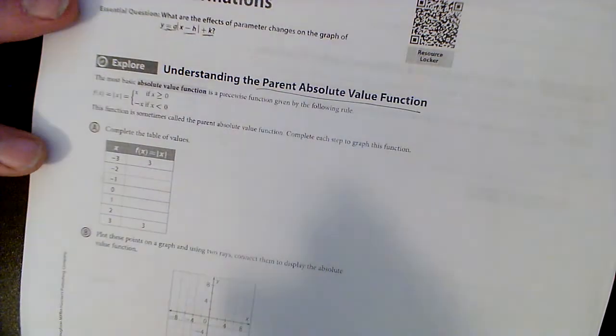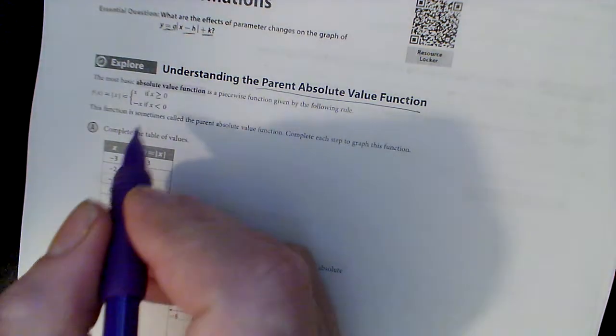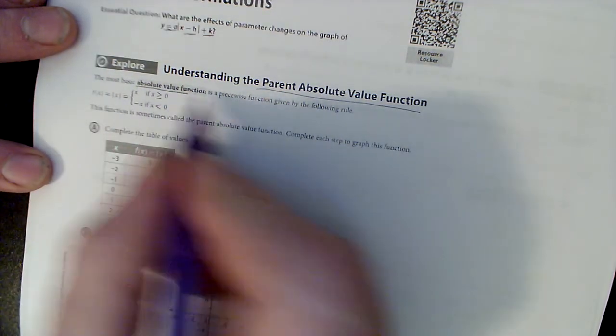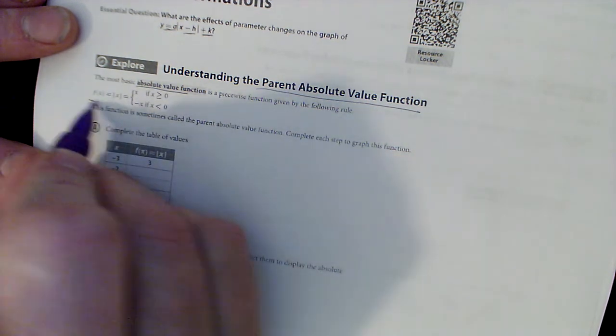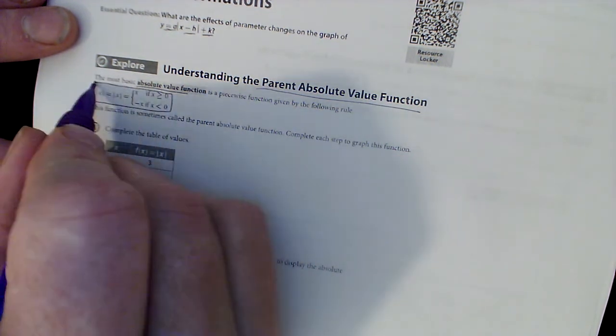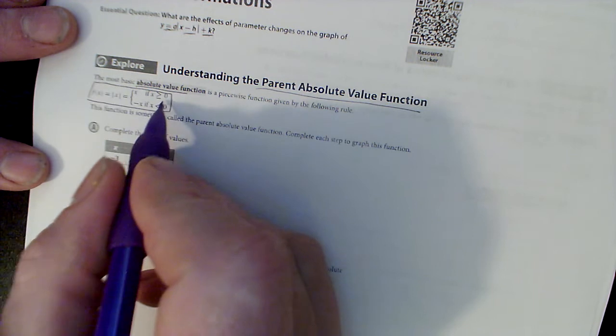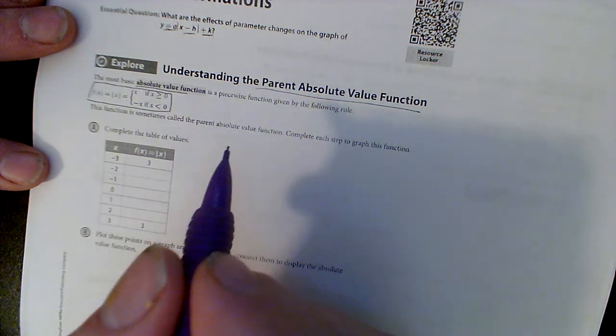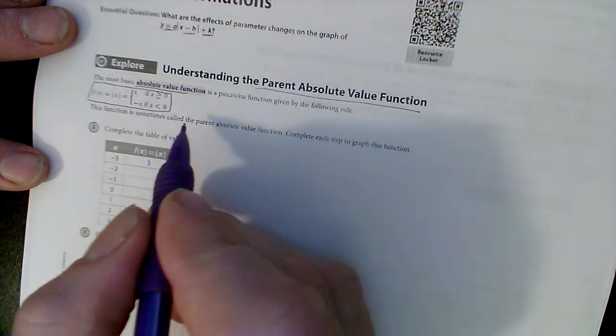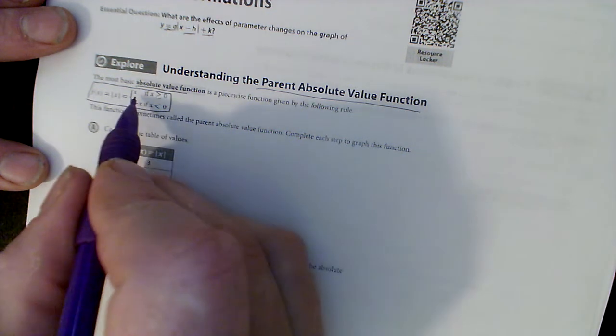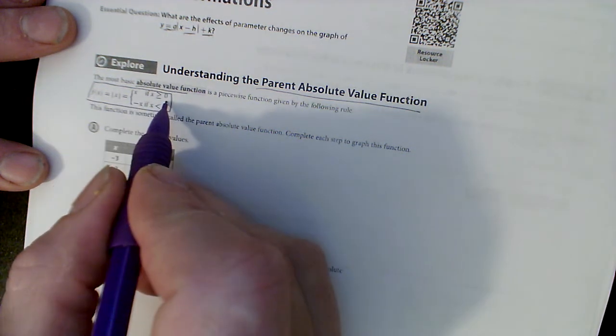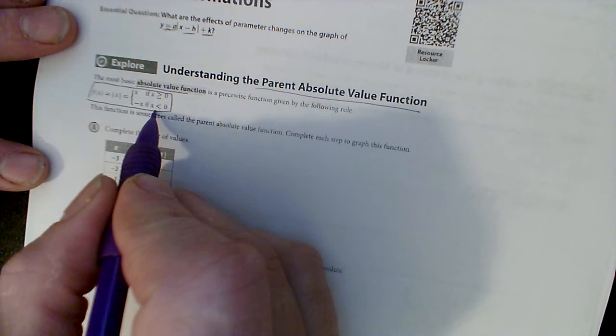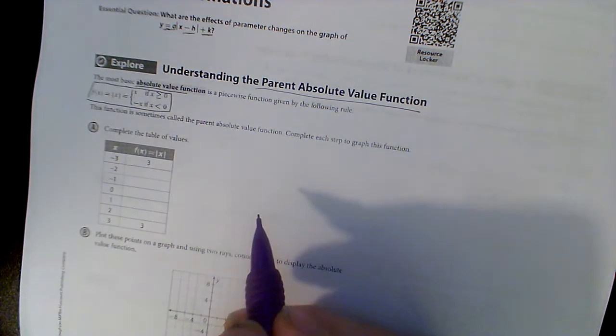This first part says the most basic absolute function is a piecewise function given by the following rule. What it says is, for some reason, an absolute function is two lines. And we're about to see that. We're relating what we just did to an absolute function, where it acts a certain way if x is greater than or equal to 0, and it acts a different way if x is less than 0.